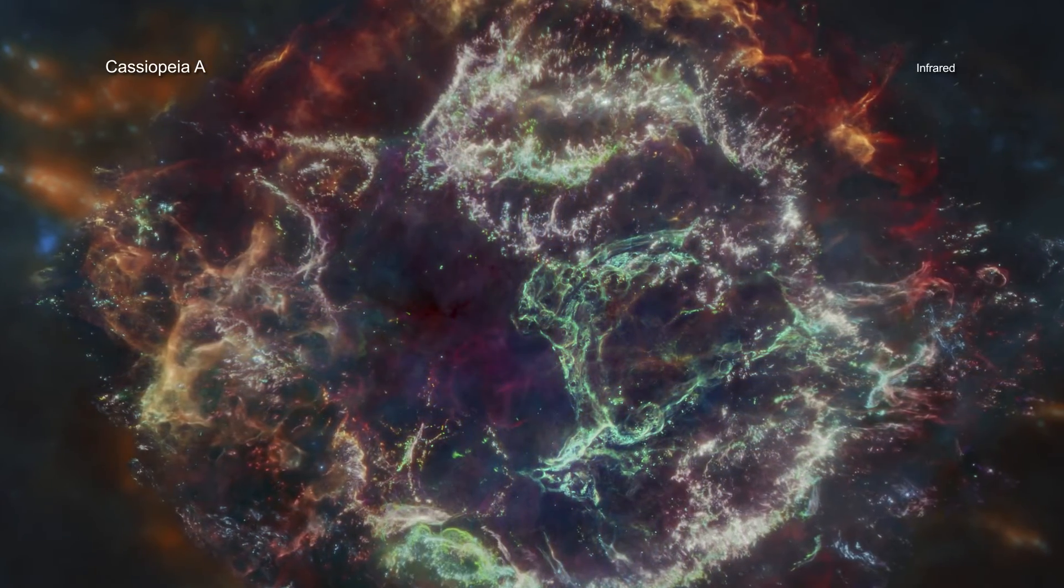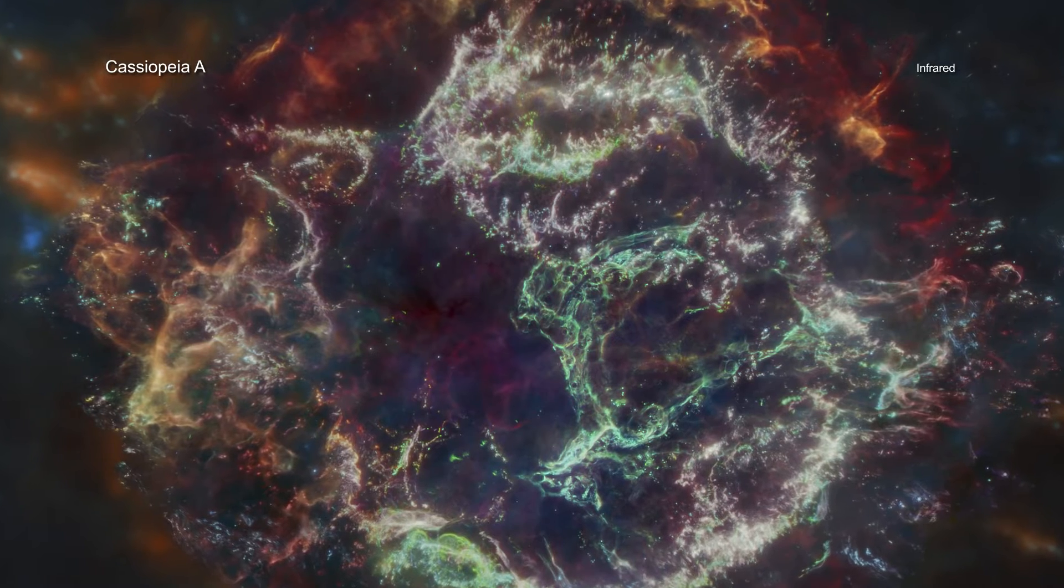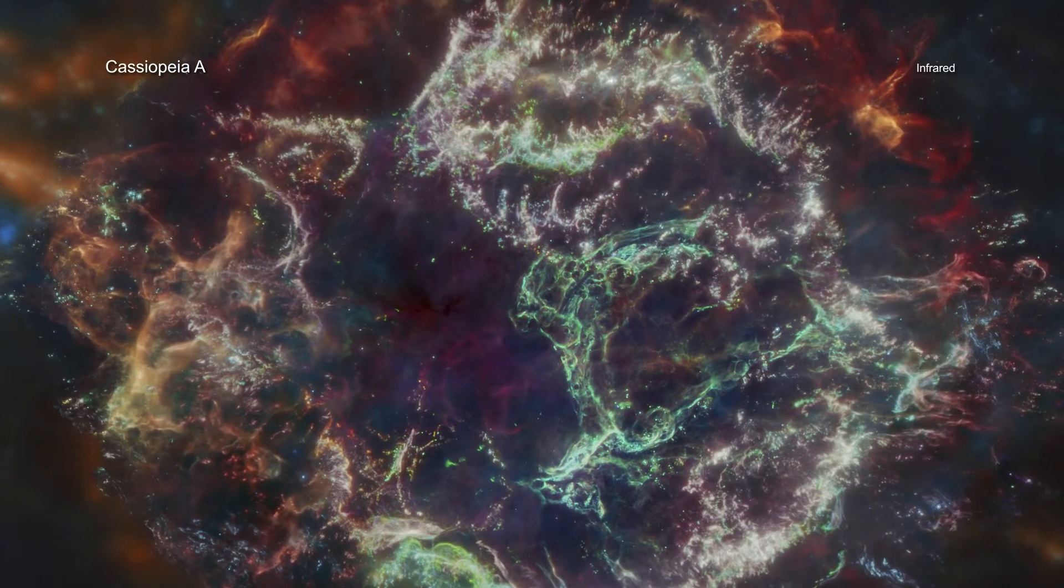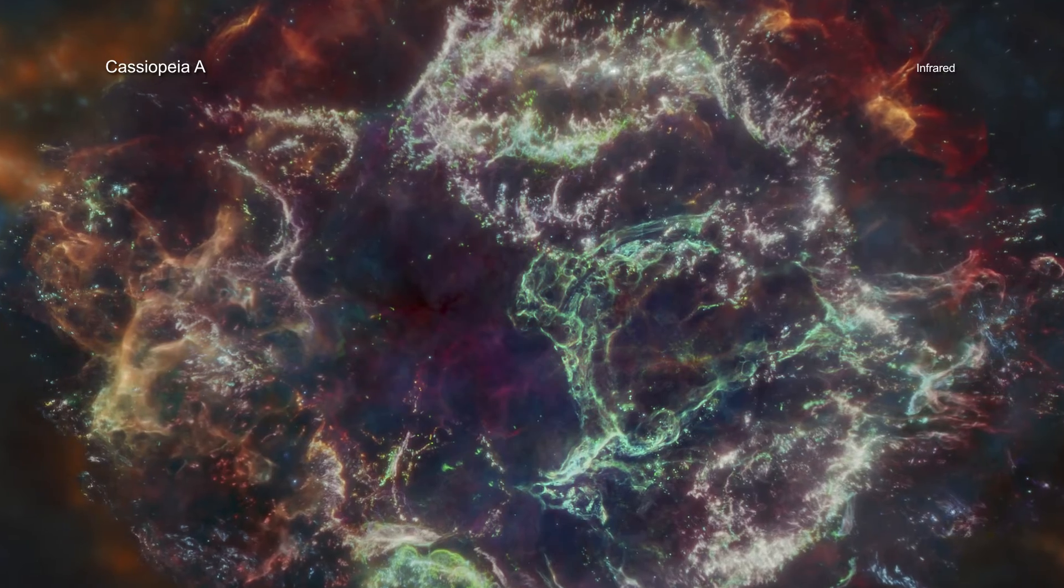Webb can see some material that has not been affected by shock waves, what can be called pristine debris. Much of this lies behind the Green Monster.